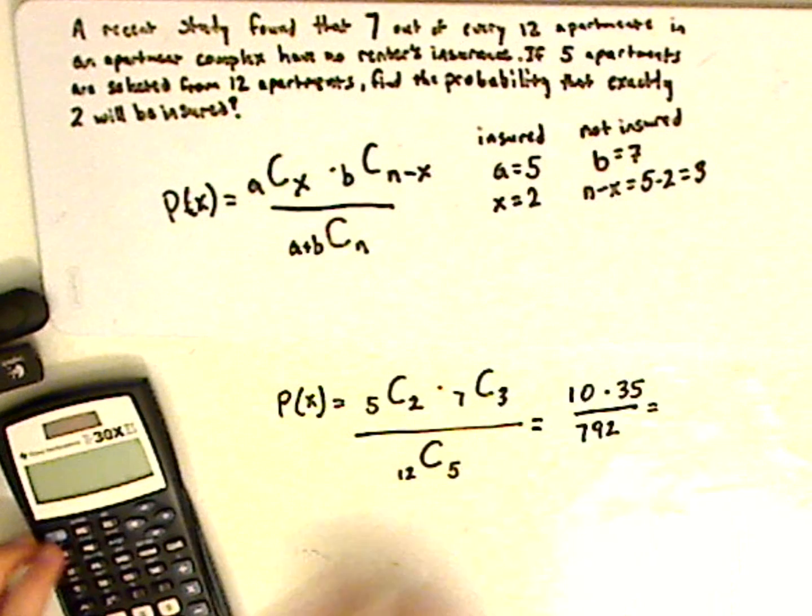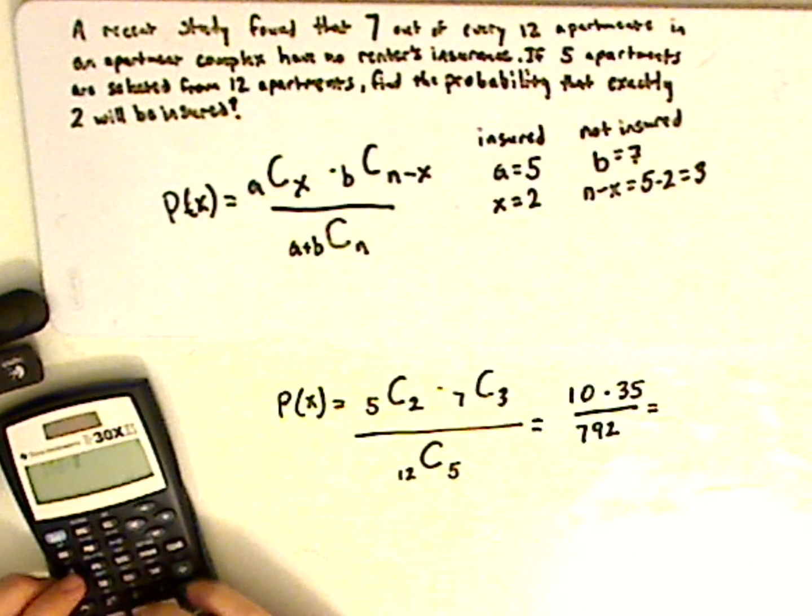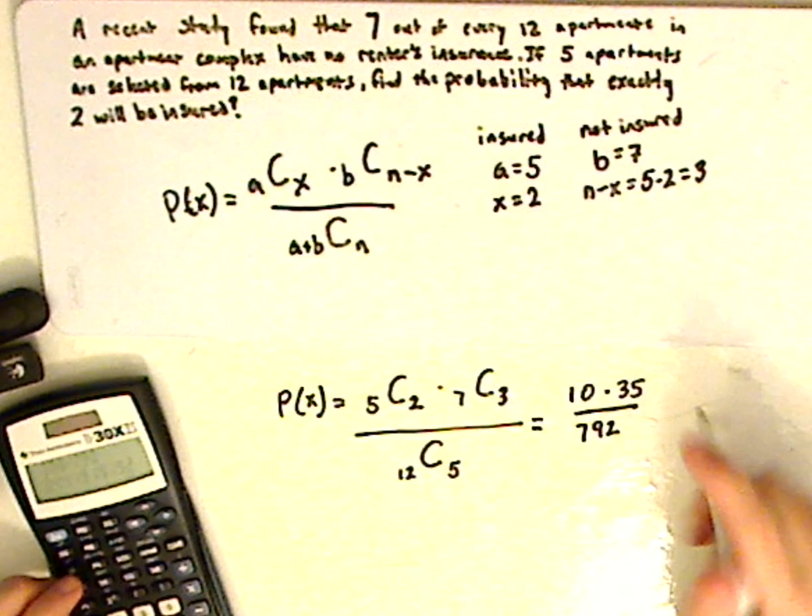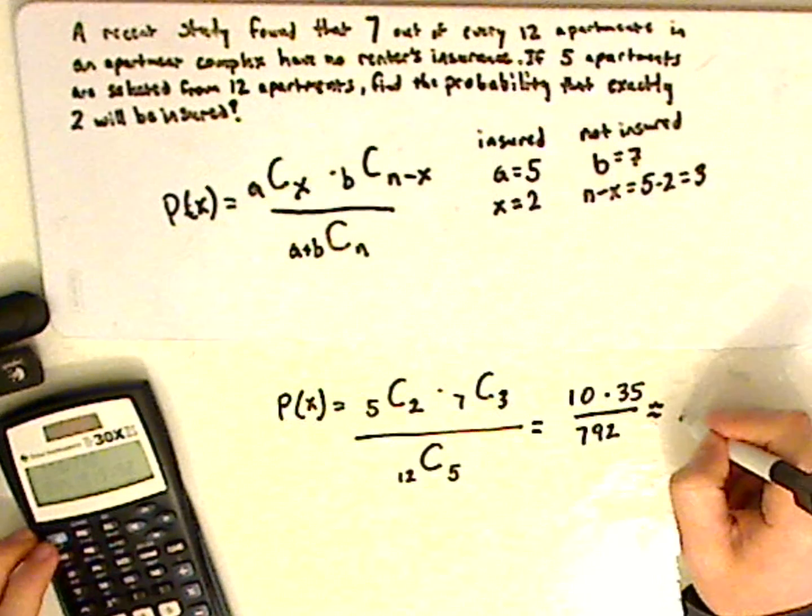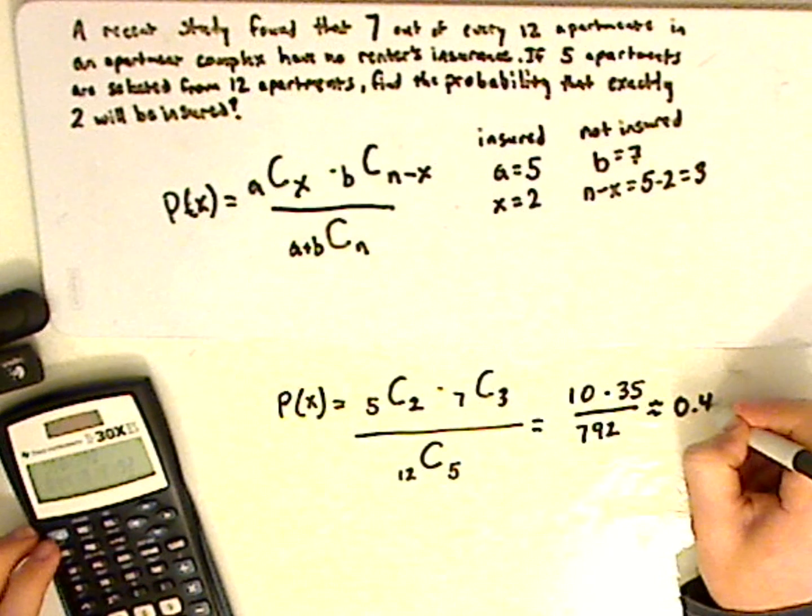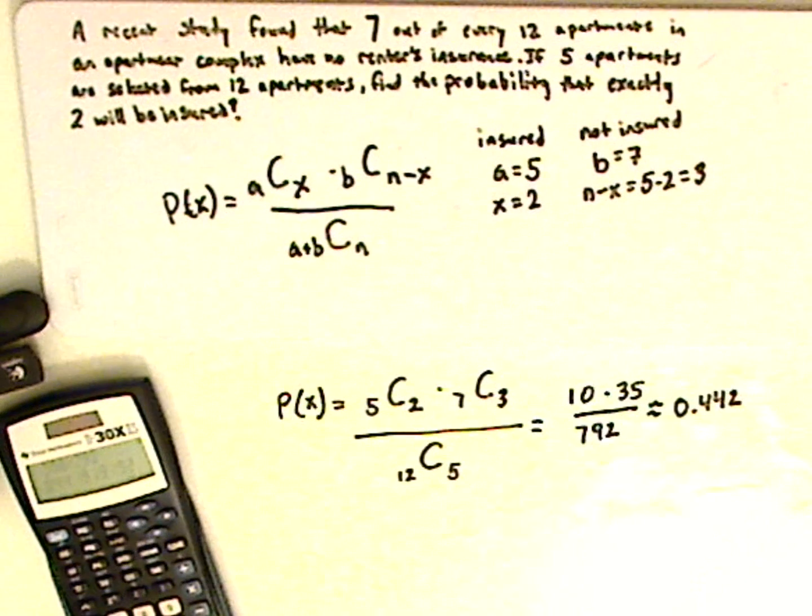Top part is 350, divided by 792, is approximately, I'm going to round it to 3 decimal places, 0.442. And that's it.